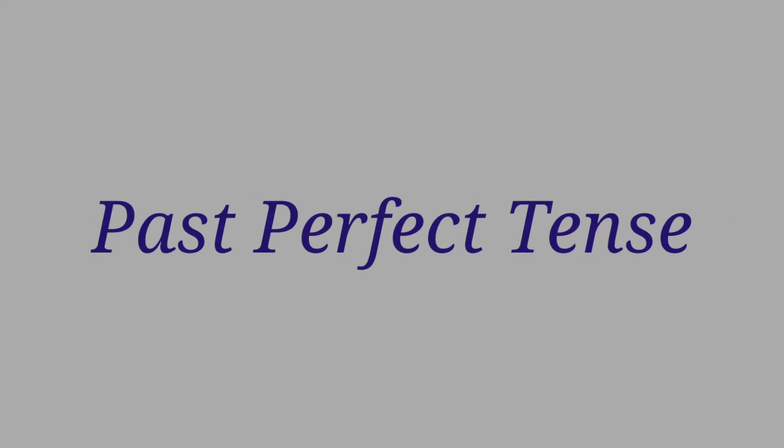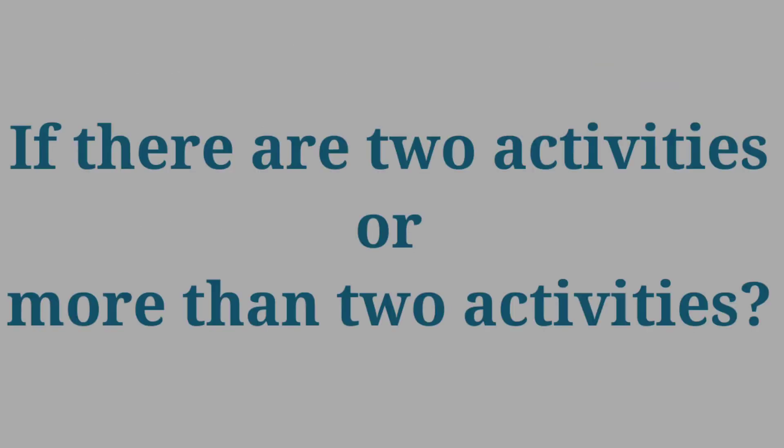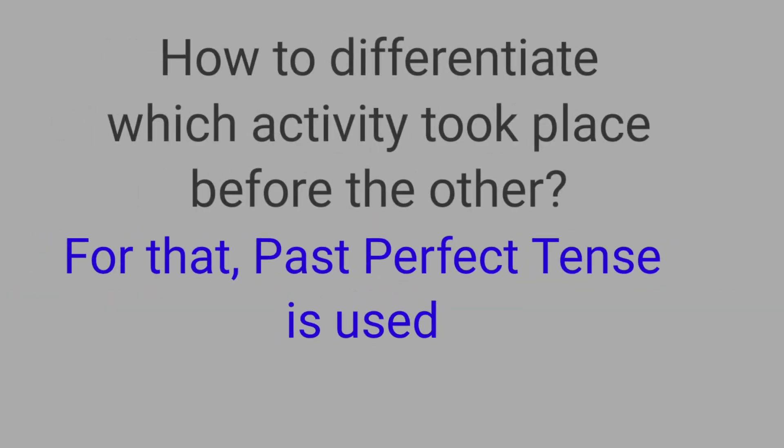This tense is used to tell us about activities that happened in the past. You might say we use past tense to tell about activities that happened in the past or before now. But what if there are two or more activities that took place in the past? How are you going to differentiate which happened first and which happened later? Well, that is where we use past perfect tense.